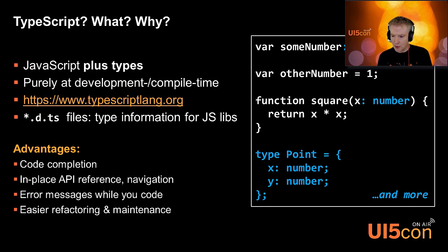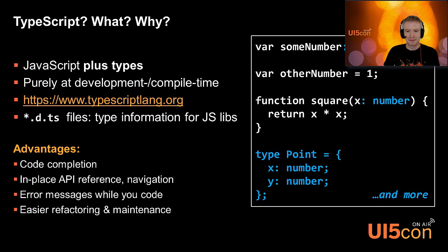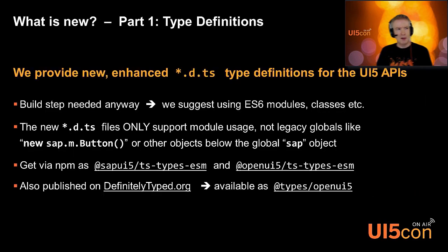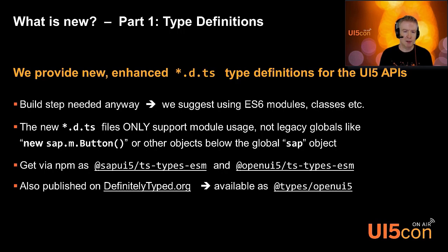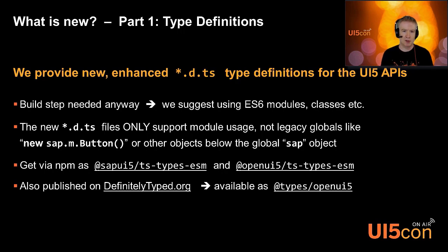In the poll I've seen the majority has some basic knowledge, some are completely new, some have solid backgrounds — a mixed audience, which is perfectly fine. SAP UI5 has already provided some type definitions mainly for code completion in Web IDE for the JavaScript version of UI5. What is new is that we're investing a lot into making those type definitions right, really good, and providing them via stable and official channels — available via NPM as @sap/ui5 or @openui5/ts-types-esm, via DefinitelyTyped.org, and as @types on NPM.